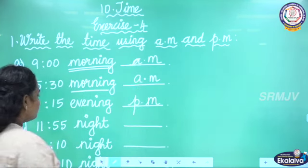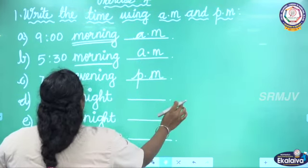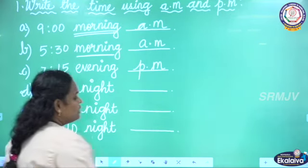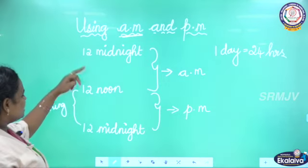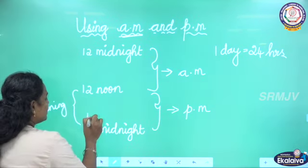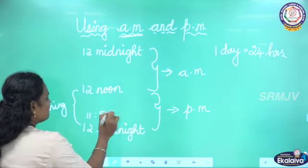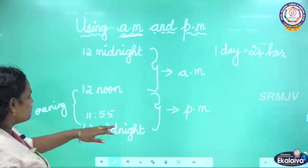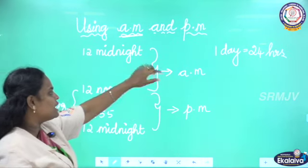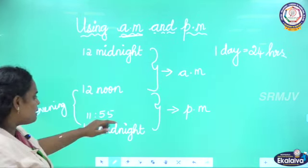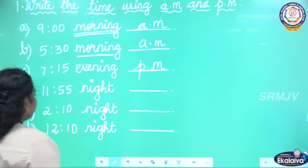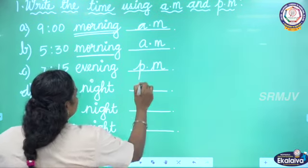Next, 11:55 night. 12 noon to 12 midnight is PM, and 11:55 night falls in between — before 12 midnight. So 11:55 night is PM.